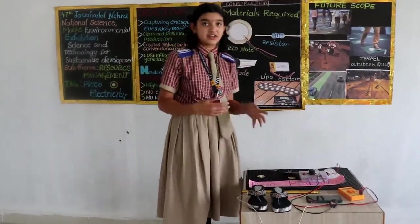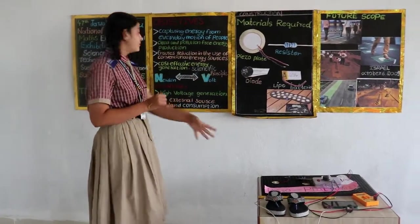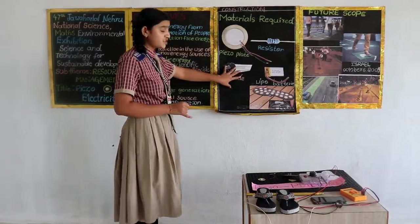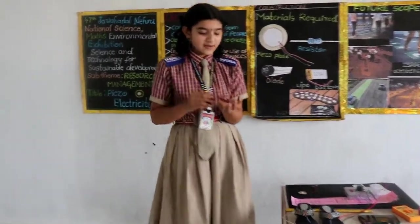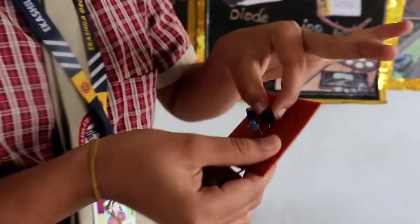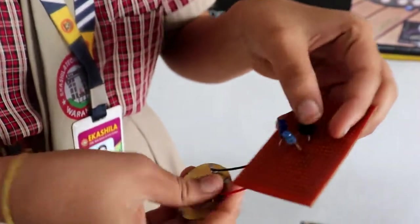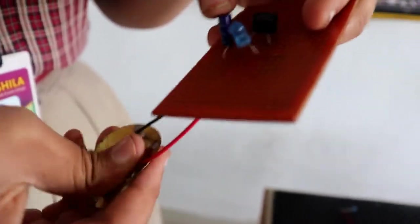Let us discuss the construction and working of our project. For construction, we need piezo plates, resistors, a rectifier or bridge diode, and a rechargeable battery. This is the piezo plate. We connect it to the bridge diode, which converts alternating current to direct current, because AC cannot be stored in the battery. Then through this diode, it passes to the capacitor, and from the capacitor to the light — the load.